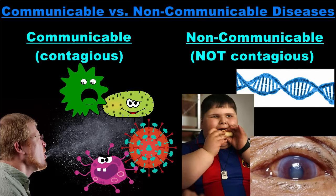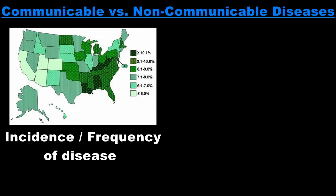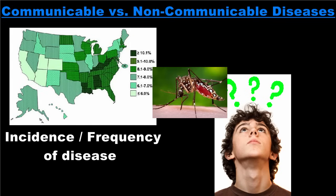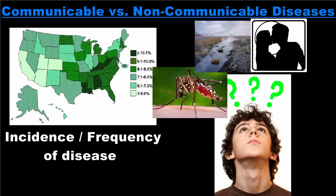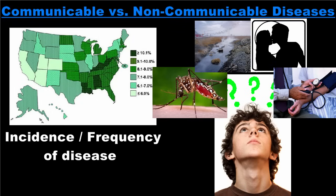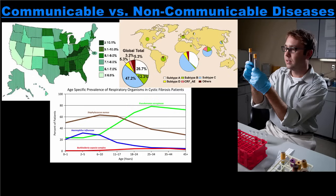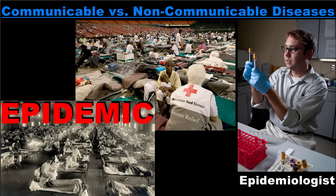At this point, you should have a good understanding of the difference between communicable diseases, those that are contagious, and non-communicable diseases, which are not contagious. Studying the incidence or frequency of both communicable and non-communicable diseases is important to improving community health. People who study the patterns, causes, and effects of diseases are called epidemiologists. Epidemiologists always have plenty of work to do, but work becomes especially busy if there happens to be a serious disease outbreak called an epidemic.